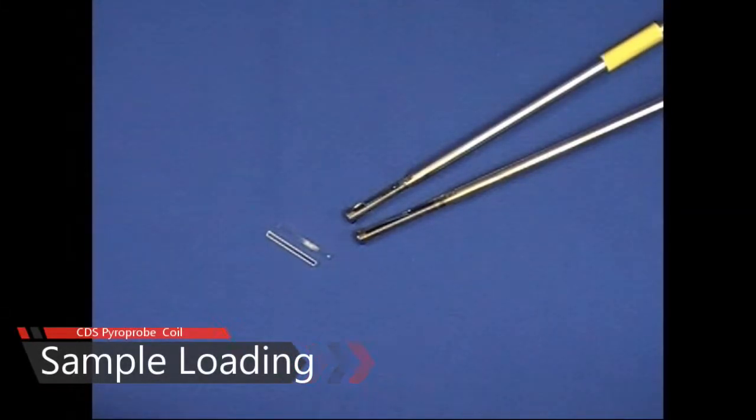The standard pyroprobe filaments come in two styles, a ribbon and a coil, and I'm showing them both here.